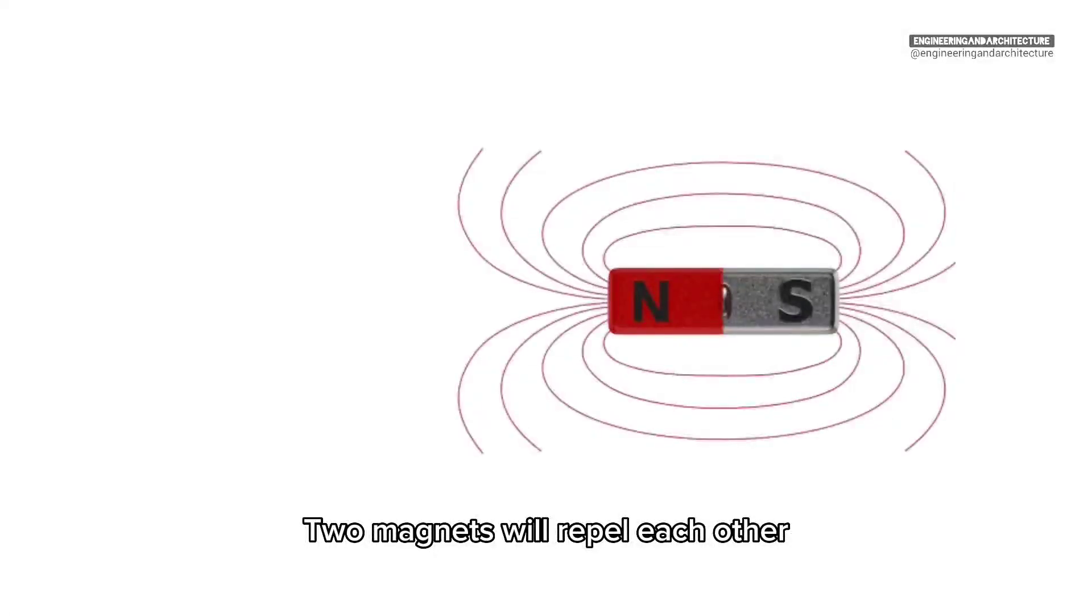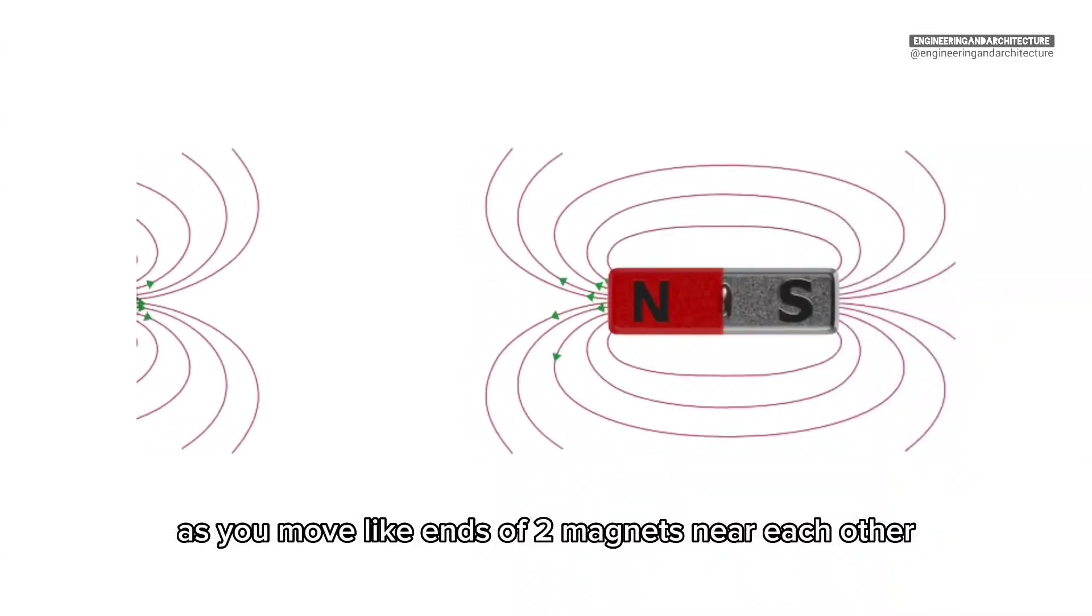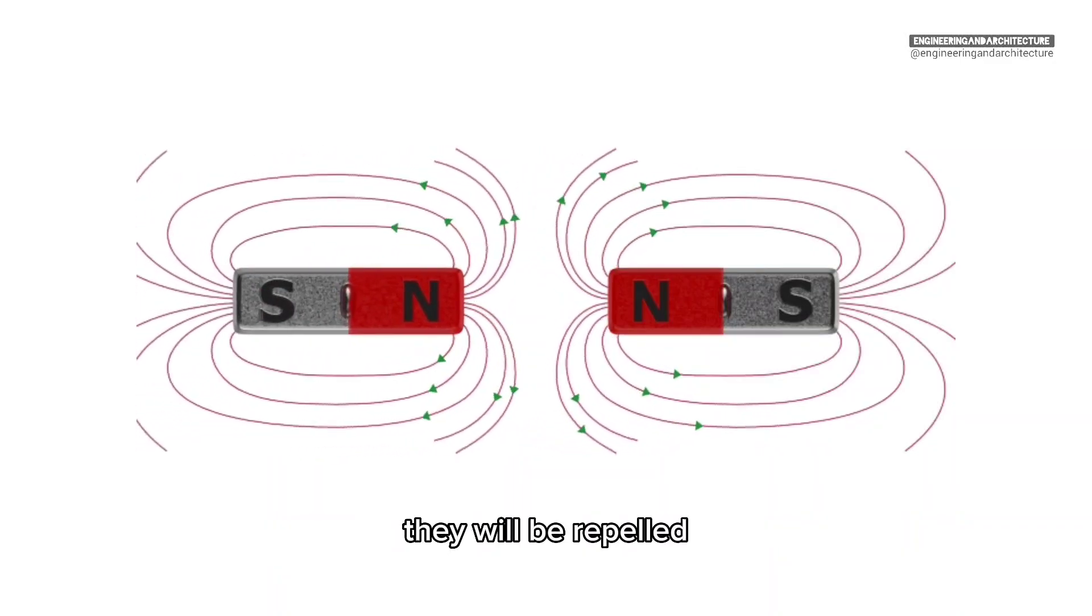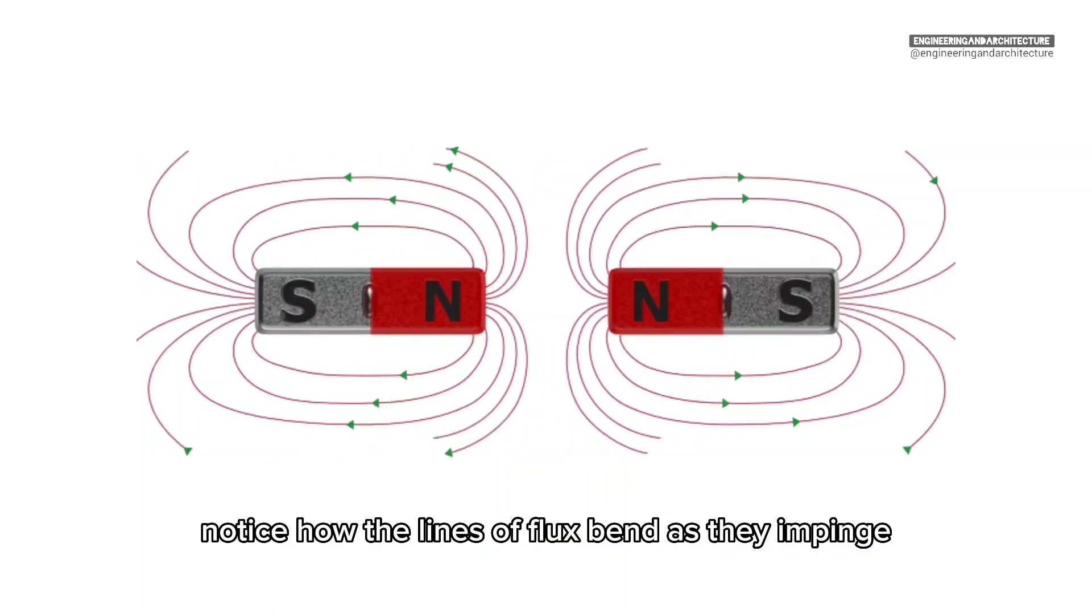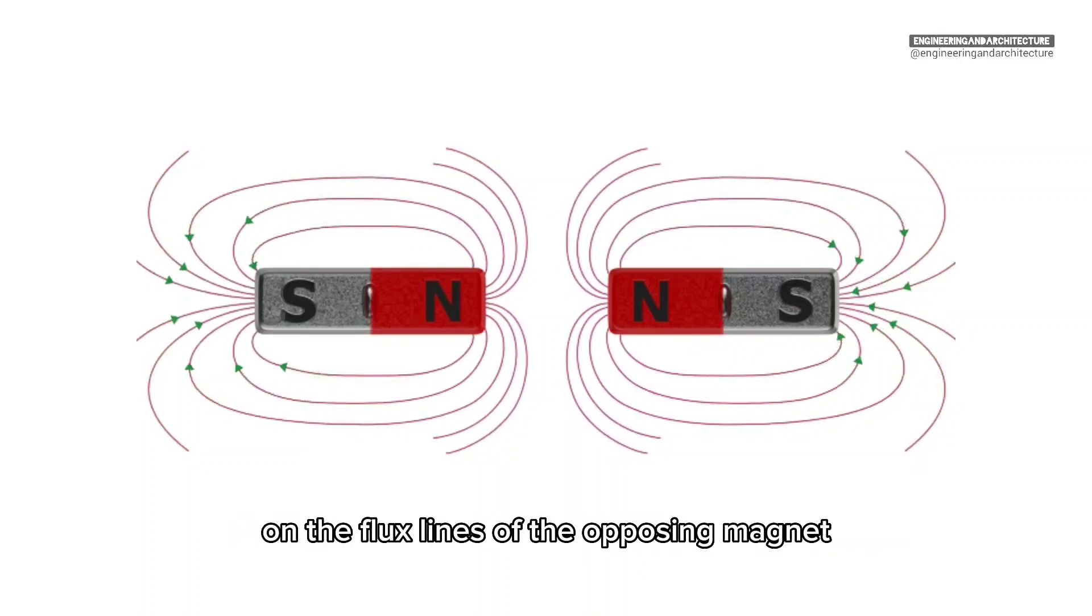Two magnets will repel each other if like poles are facing each other. As you move like ends of two magnets near each other, they will be repelled. Notice how the lines of flux bend as they impinge on the flux lines of the opposing magnet. This magnetic behavior will occur for both like ends of a magnet.